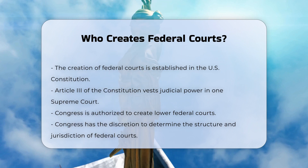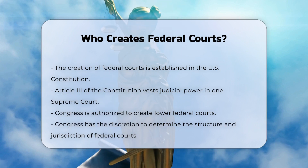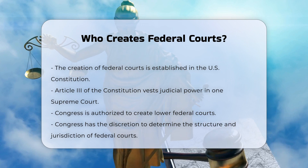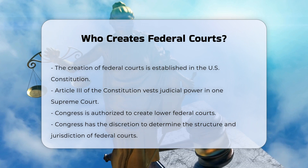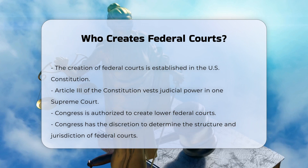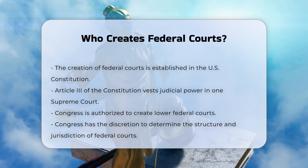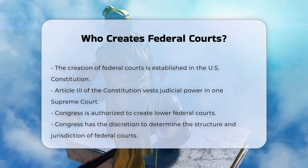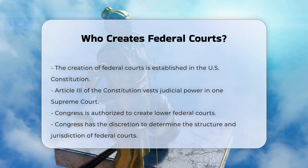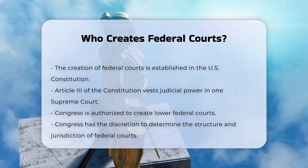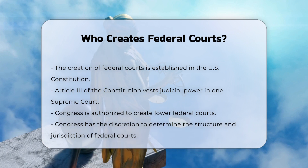Constitutional basis. The U.S. Constitution, specifically Article 3, establishes the foundation for the federal court system. It vests the judicial power of the United States in one Supreme Court and authorizes Congress to create lower federal courts.